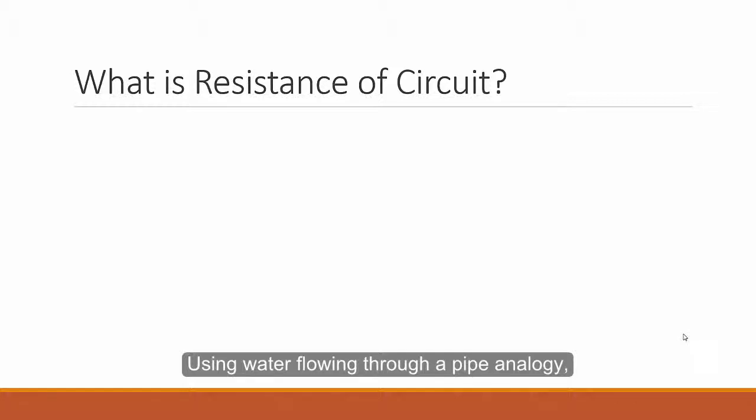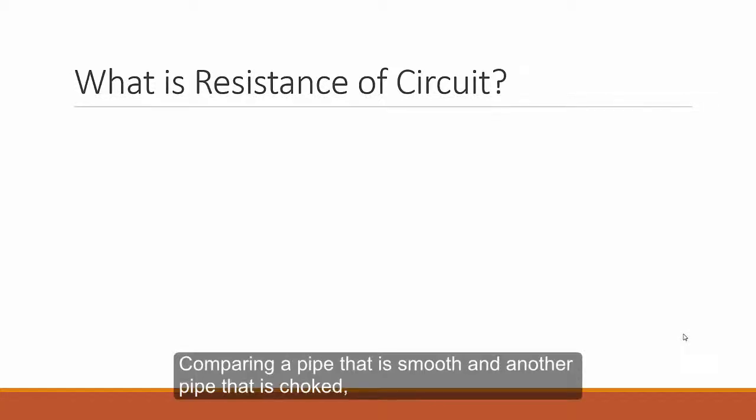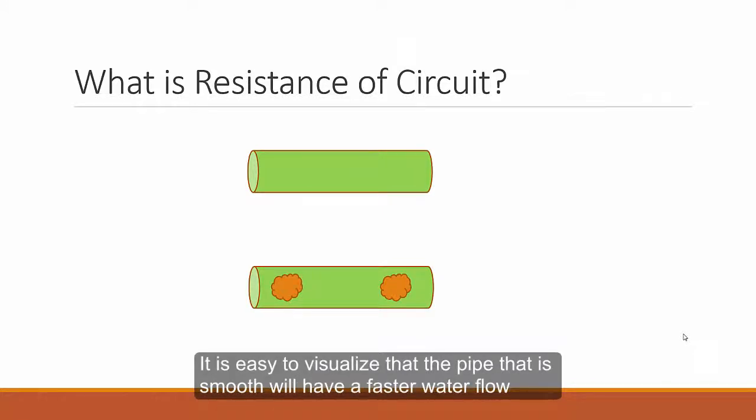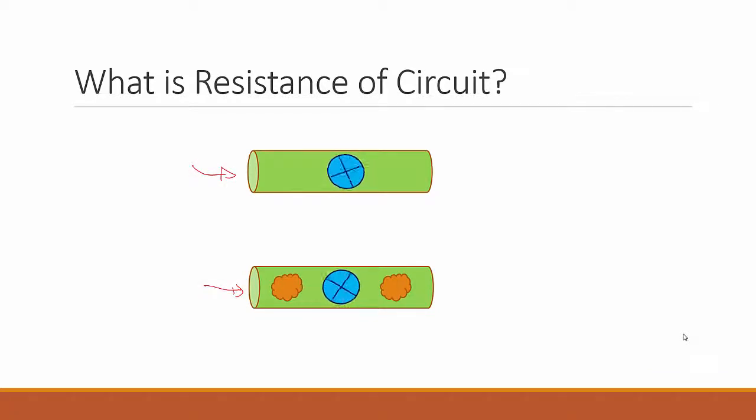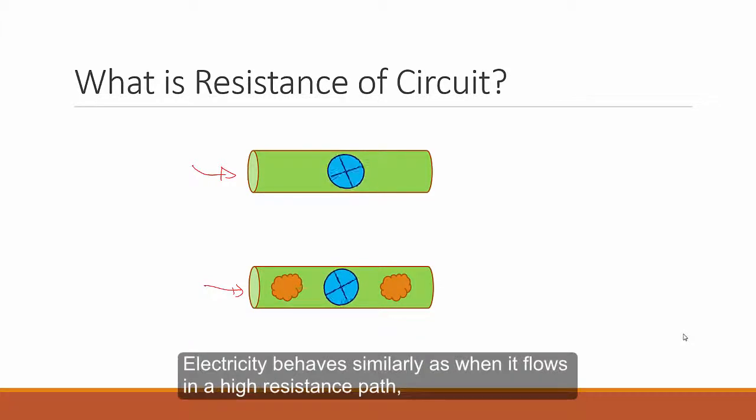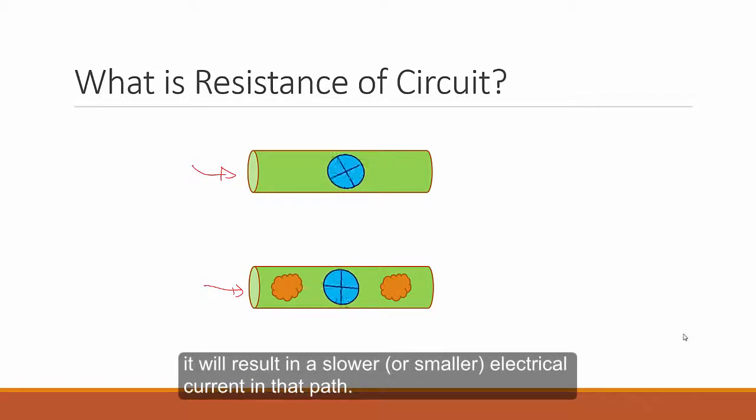Using water flowing through a pipe analogy, comparing a pipe that is smooth and another pipe that is choked, it's easy to visualize that the pipe that is smooth would have a faster flow of water as compared to the choke pipe. So if the water is flowing, you'll find that the choke pipe will have a slower flow. Electricity behaves similarly as it flows in a high resistance path, it will result in a slower or smaller electrical current in that path.